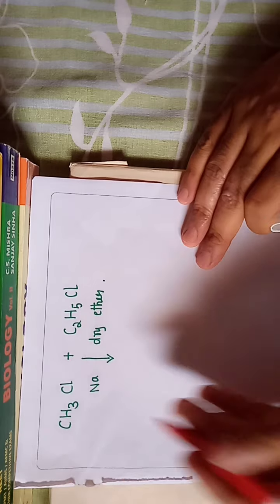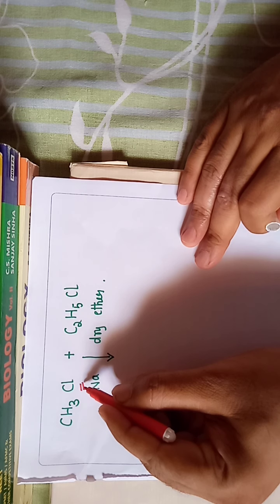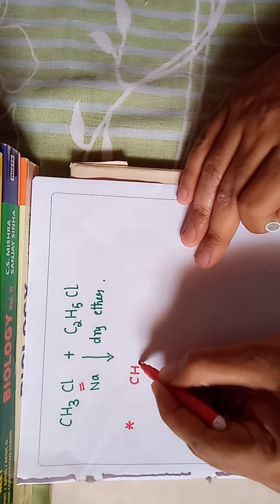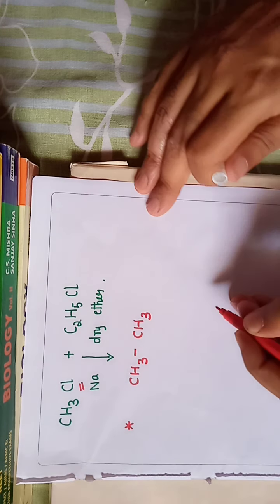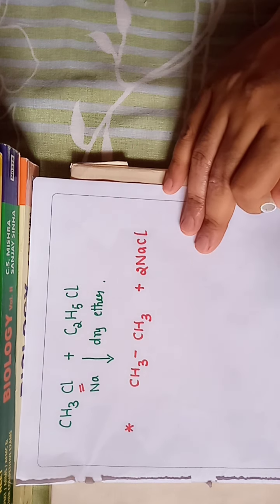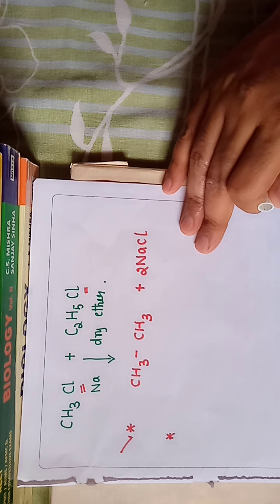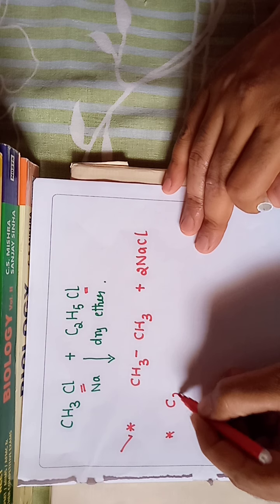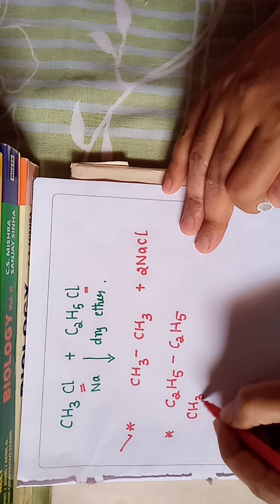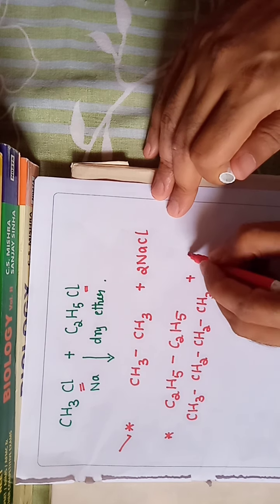Consider first: if two methyl chloride molecules react with sodium, we get one product — ethane (CH3-CH3) — plus 2 NaCl. Second, if only ethyl chloride molecules are involved in the Wurtz reaction, we get the product C2H5-C2H5, which expands to CH3-CH2-CH2-CH3, that is butane, plus 2 NaCl.